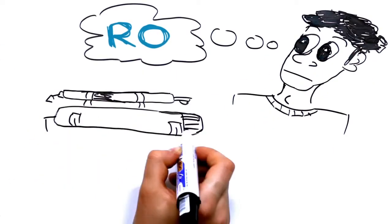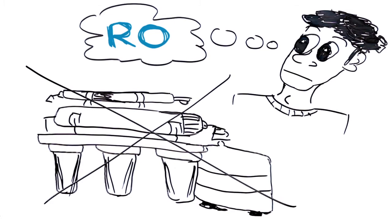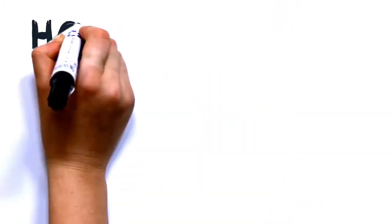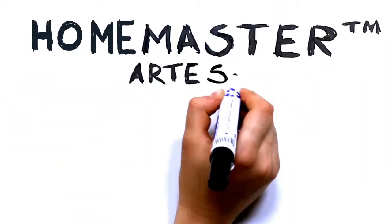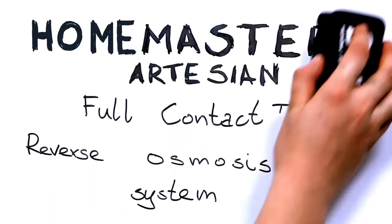Thinking about getting an RO system for your home or office? Don't get stuck with an old-style canister RO system fraught with problems. The Home Master Artesian Full Contact Reverse Osmosis System solves the four main problems associated with traditional RO systems.